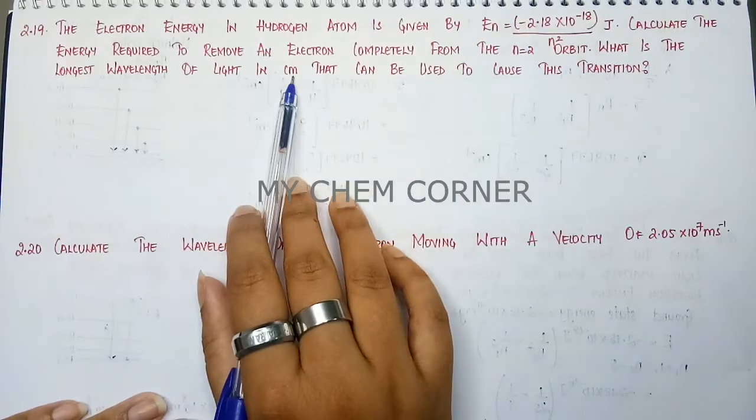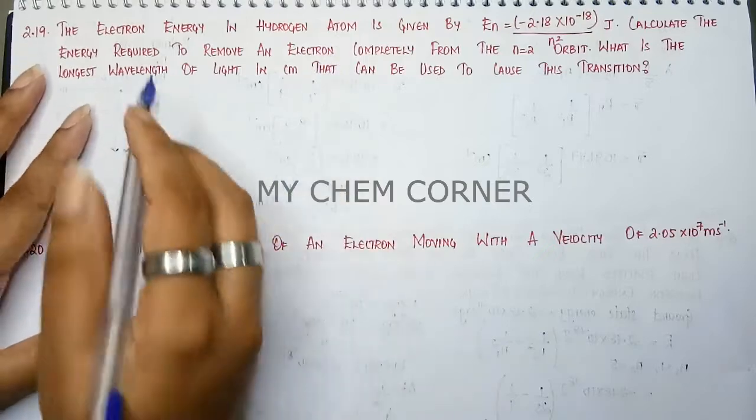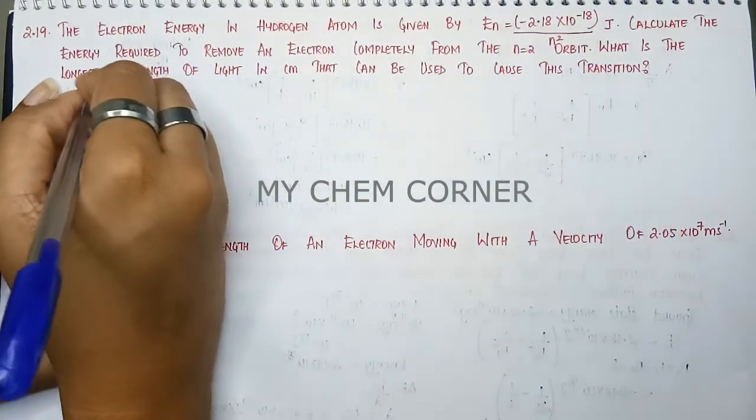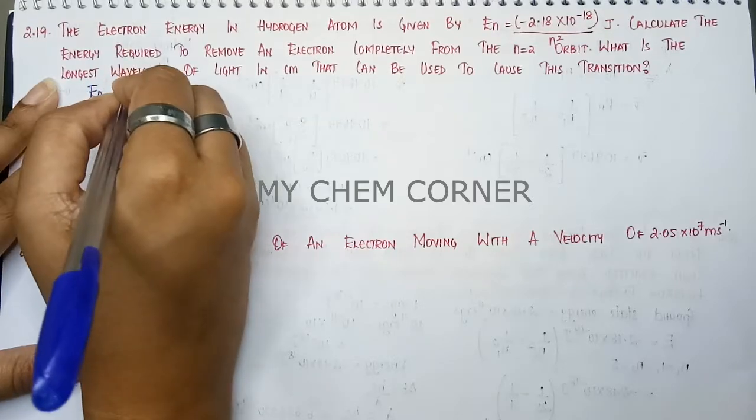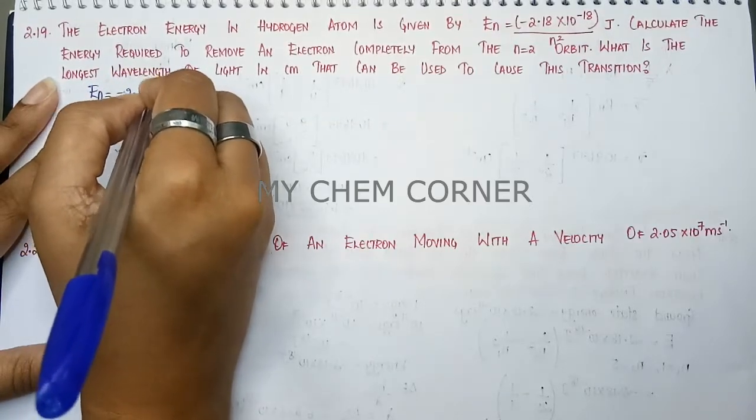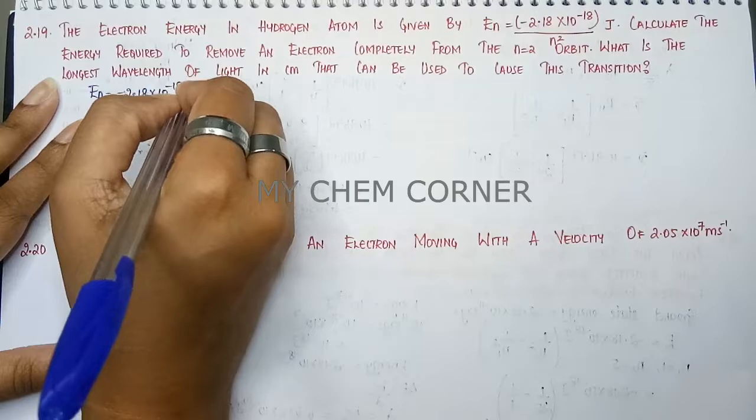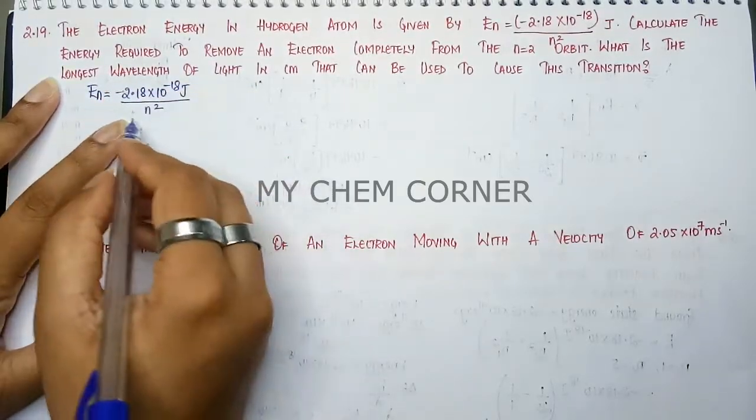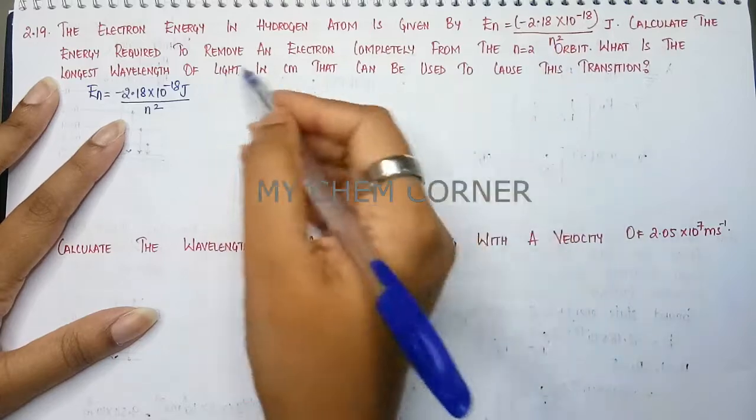you are going to find out what is the wavelength. So here we can write that energy En equals minus 2.18 times 10 to the power minus 18 Joules by N square. This is the formula given to us in the question. We are going to use the same one.